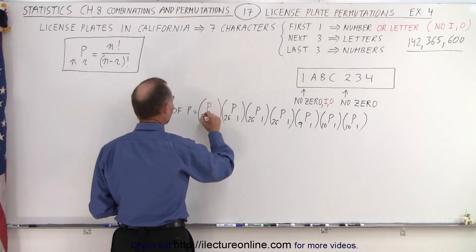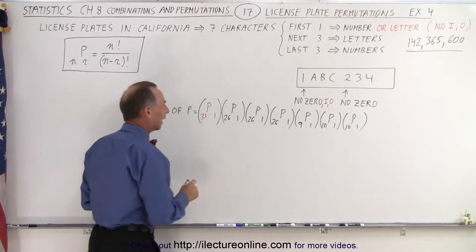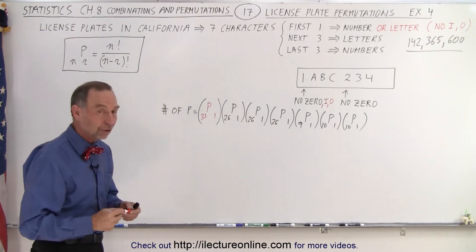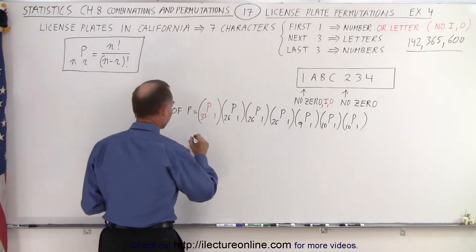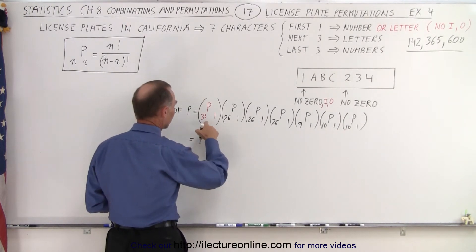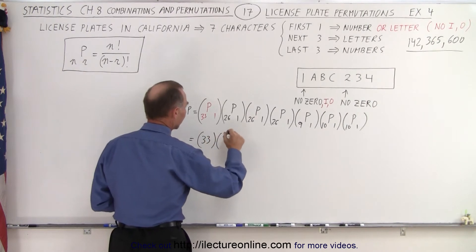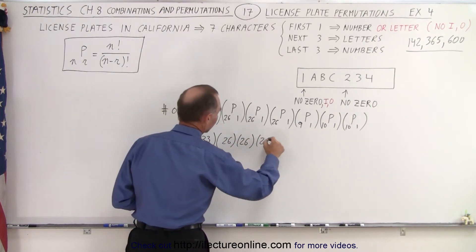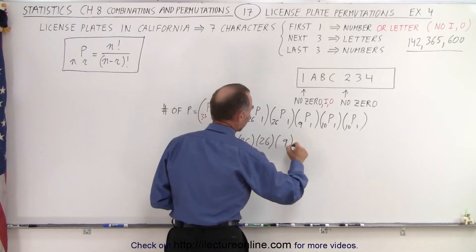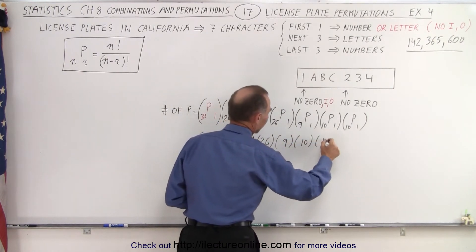So now we have P(33,1), and now we have to calculate the new amount of permutations. So in this case, this is equal to 33 times 26 times 26 times 26 times 9 times 10 and times 10 squared.